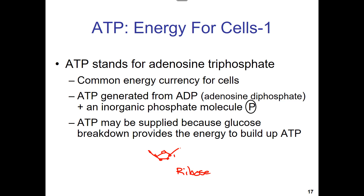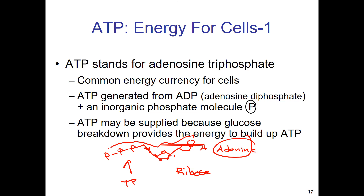Attached to the first carbon is where you have a nitrogenous base — in this case, the nitrogenous base adenine. Then on the five-prime carbon, we put one, two, three phosphates — your triphosphate. When adenine is attached to a sugar and phosphate together, we call the whole molecule not adenine but adenosine, and that's where ATP comes from.